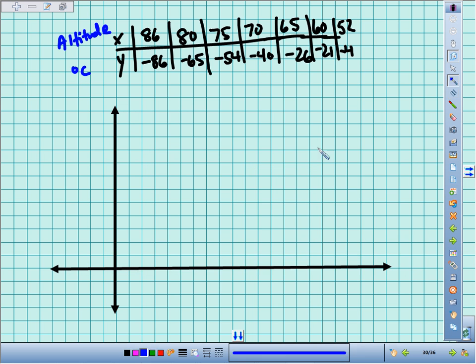And y is our degrees Celsius. So I'll set up my axes. I want to make sure I label so people know what they're looking at. We're looking at altitude measured in kilometers, and we're looking at temperature in degrees Celsius. Now the altitudes go from a high of 86 down to a low of 52.